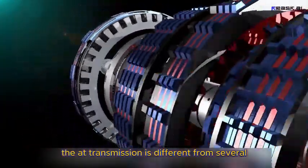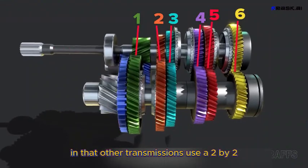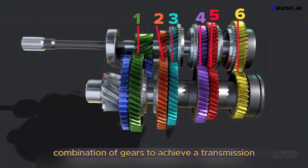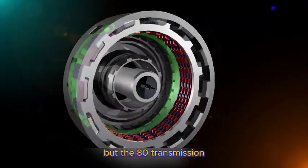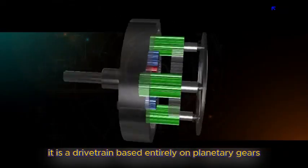The AT transmission is different from several other transmissions in that other transmissions use a 2x2 combination of gears to achieve transmission. But the AT transmission? It is a drivetrain based entirely on planetary gears.